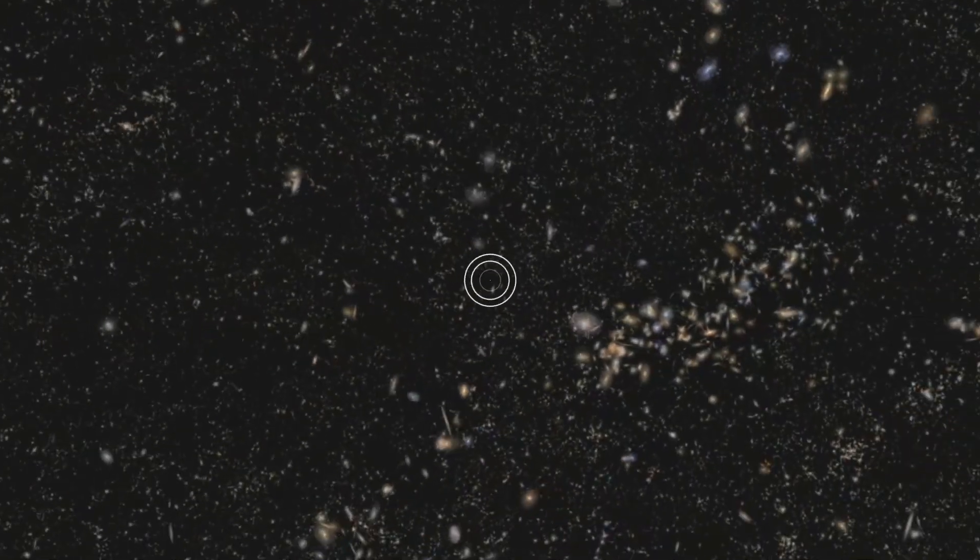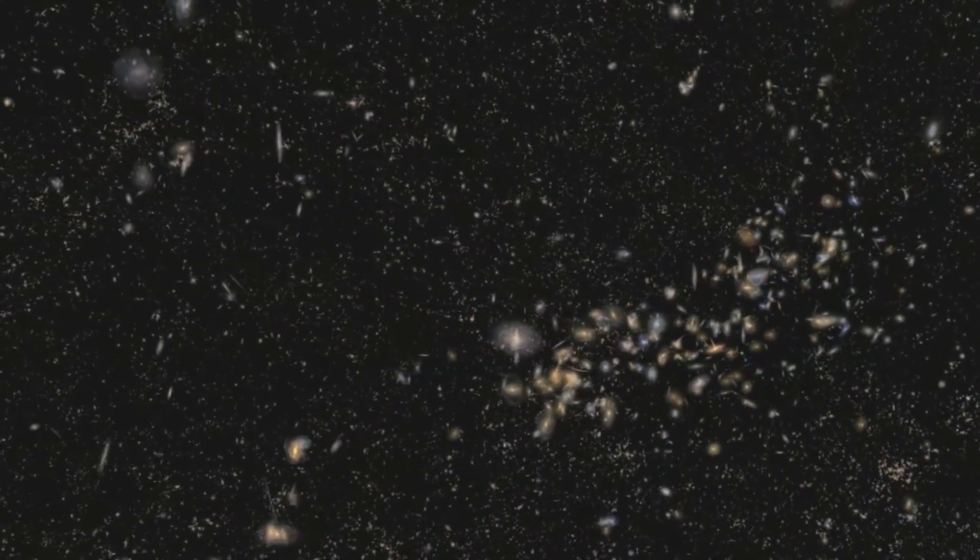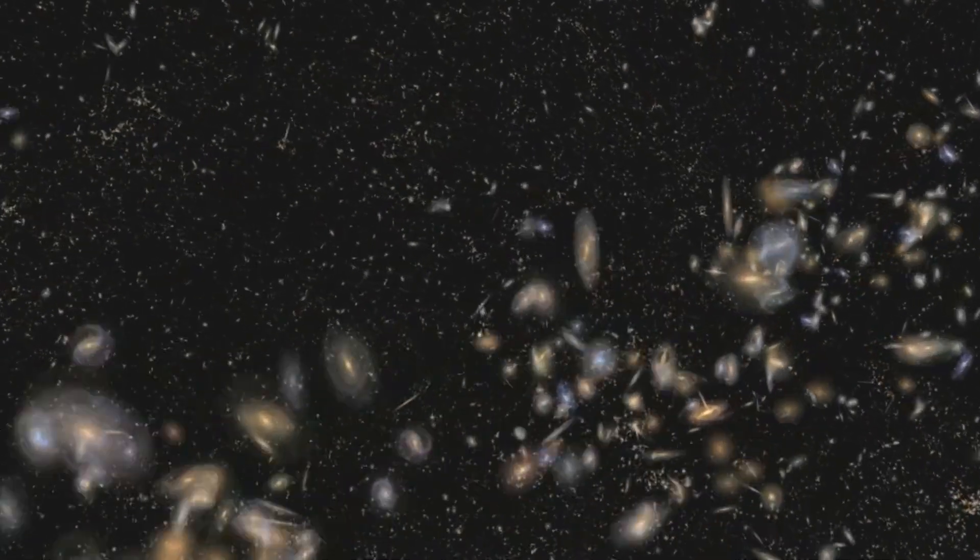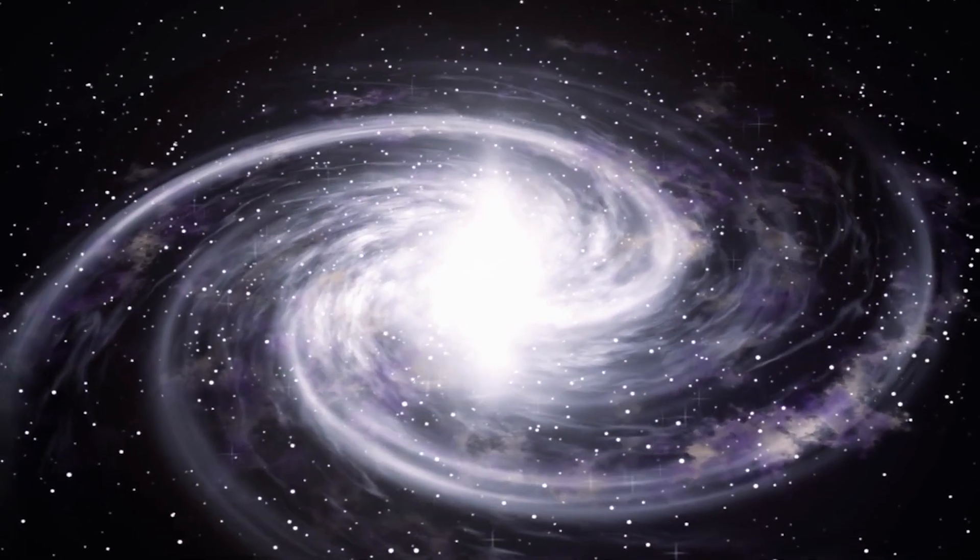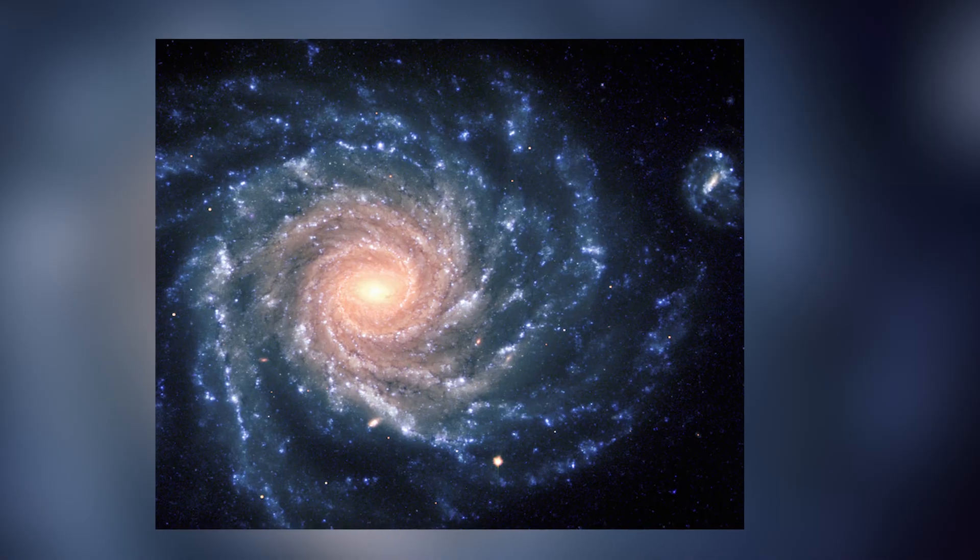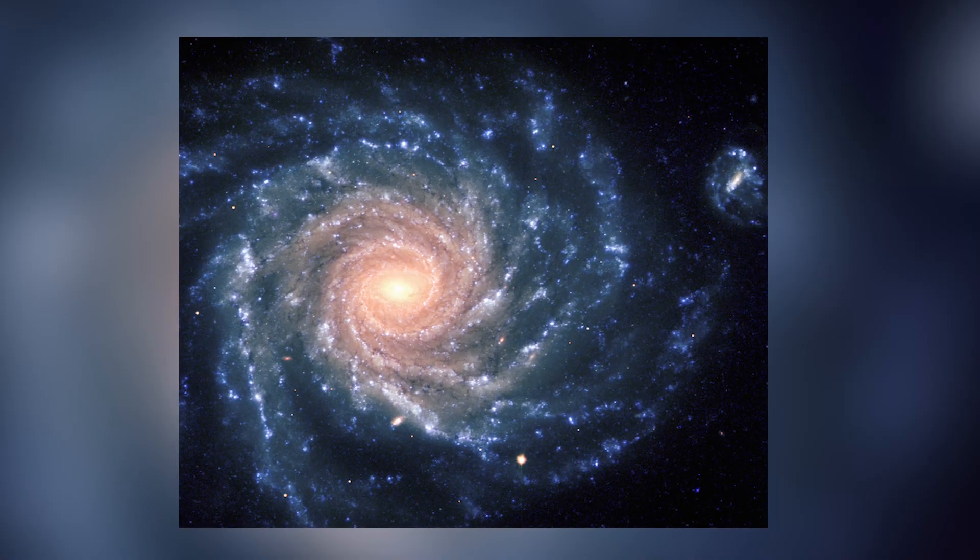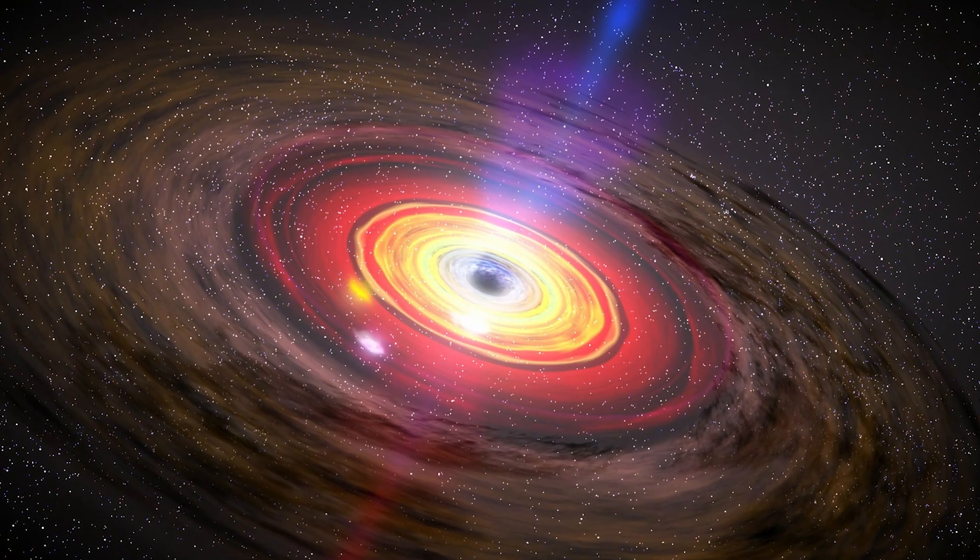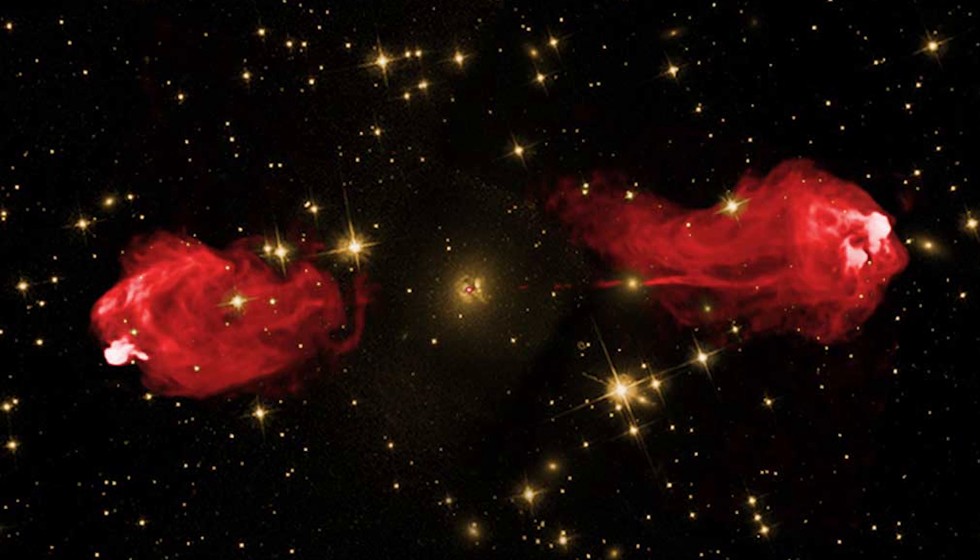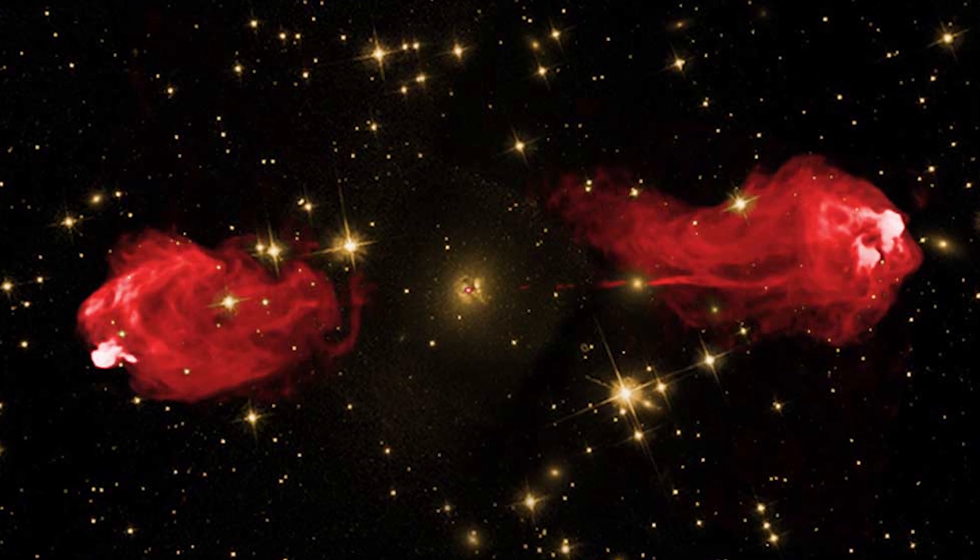Once they had measured the lobes, the researchers used the Sloan Digital Sky Survey to try to understand the host galaxy. They found that it's a fairly normal elliptical galaxy embedded in a filament of the cosmic web, clocking in at around 240 billion times the mass of the Sun, with the supermassive black hole at its center around 400 million times the mass of the Sun. Both of these parameters are actually at the low end for giant radio galaxies, which could provide some clues as to what drives the growth of radio lobes.